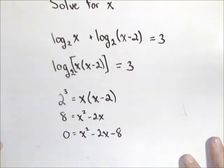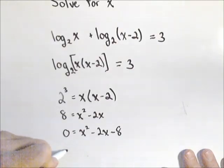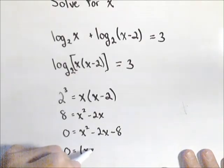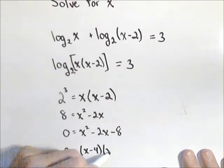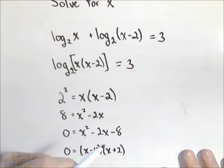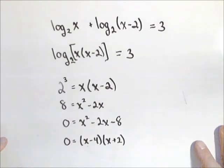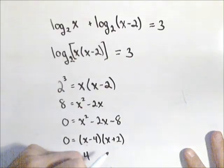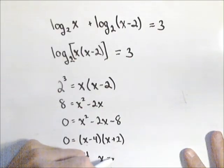So let's see what our two solutions are. This one, it turns out, will factor. If it doesn't, you can use the quadratic formula. This factors into x minus four times x plus two, which gives us two solutions. It gives us x equals four and x equals negative two.